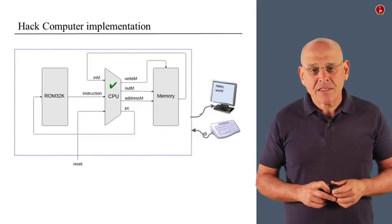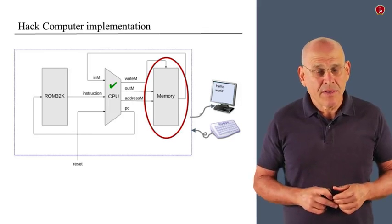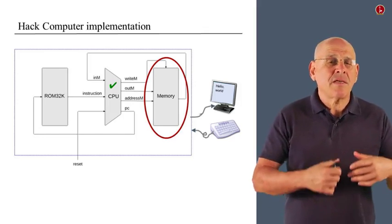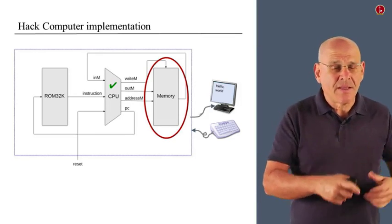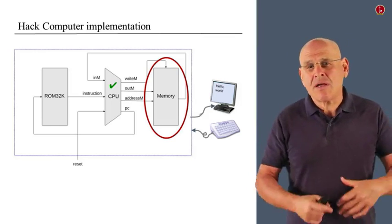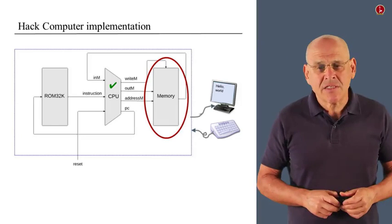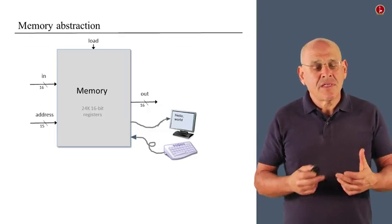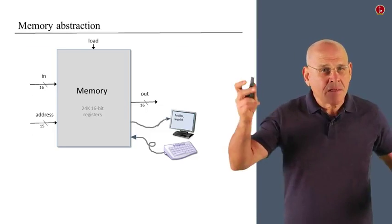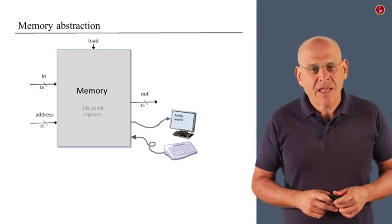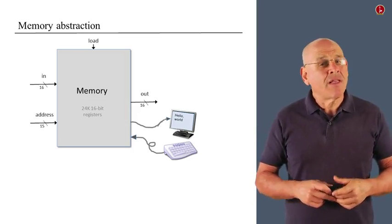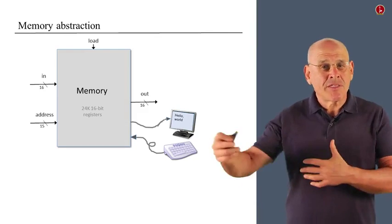And the next thing that I want to discuss is the memory unit. The data memory unit, which is the unit that contains the running program and the data that the program generates, the variables. And in a higher level language objects, arrays, and so on and so forth. All right, so this is the memory abstraction. It's a single address space that has an in and address inputs and an out output. And it also has this nice side effect of refreshing a screen and probing what the user is doing with the keyboard.